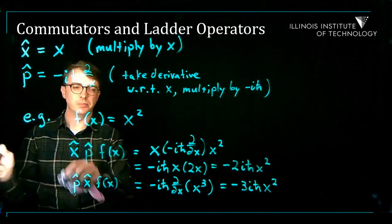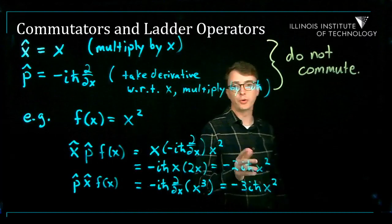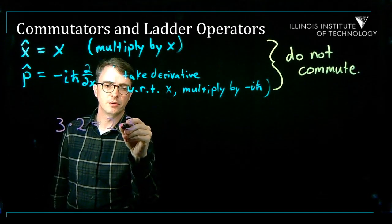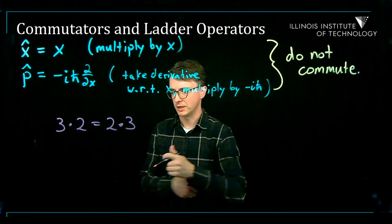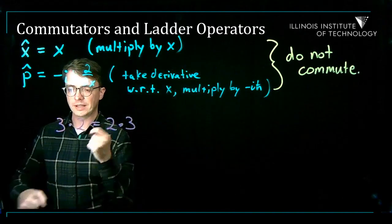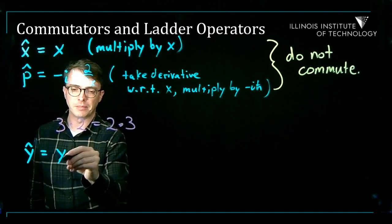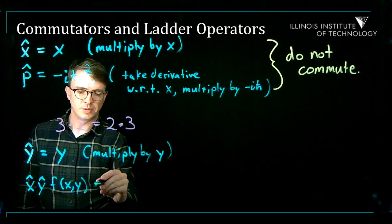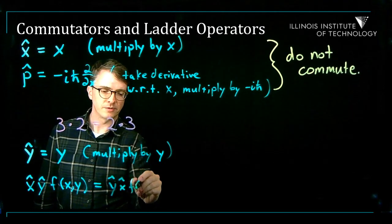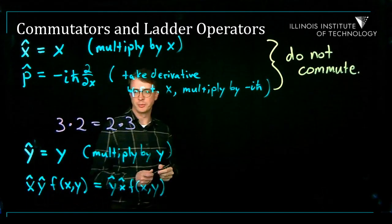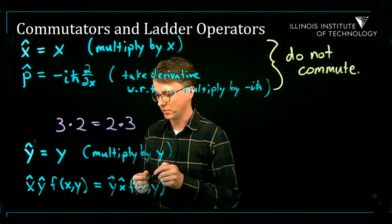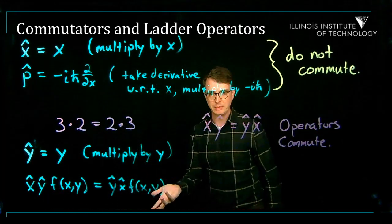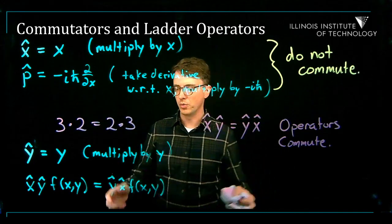We say that x and p do not commute — meaning the order matters. Regular numbers do commute: 3 times 2 equals 2 times 3. Some operators also commute; for example, x-hat and y-hat (multiply by y) commute because multiplication commutes. But not all operators commute, as we just saw with x and p. It's important to know which operators commute with each other and which don't.